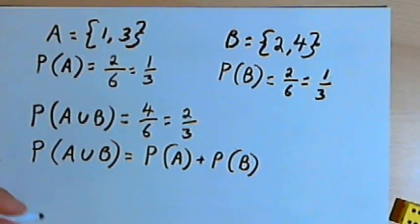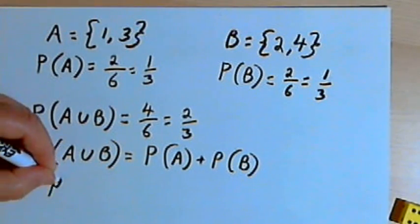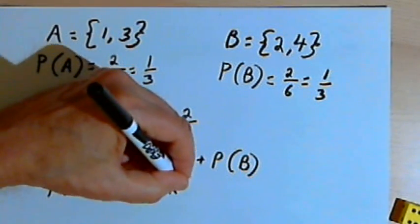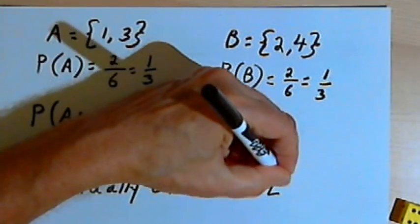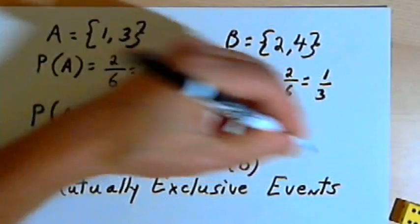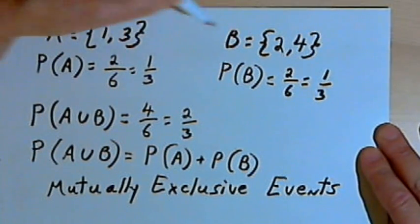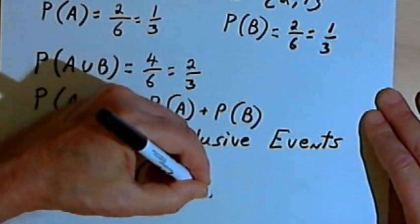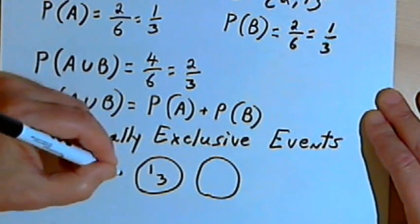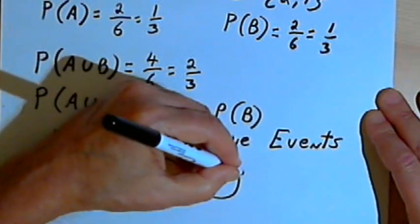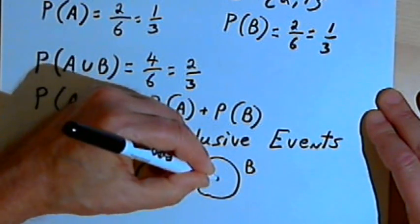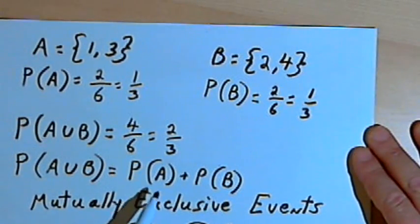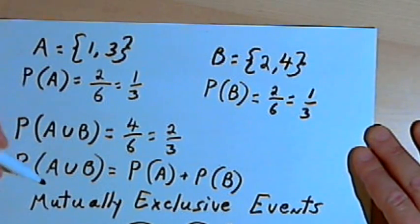This works because A and B are what we call mutually exclusive events. Mutually exclusive events are events that don't have anything in common. I can think of this as a Venn diagram — two circles which don't overlap. One circle is for event A with a 1 and a 3 in it, and the other is for event B with a 2 and a 4. With mutually exclusive events, we can just add up their individual probabilities to get the probability of their union.